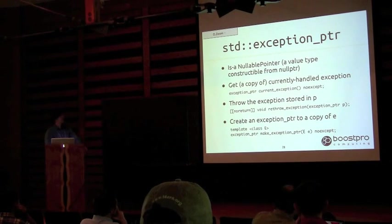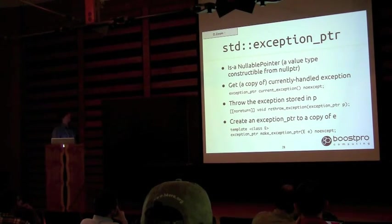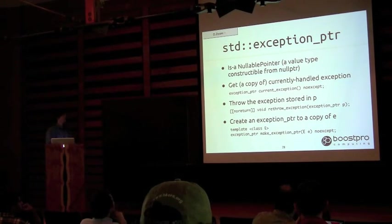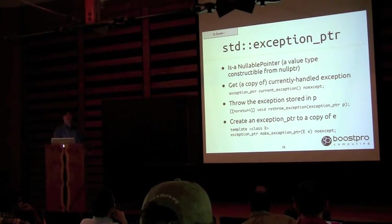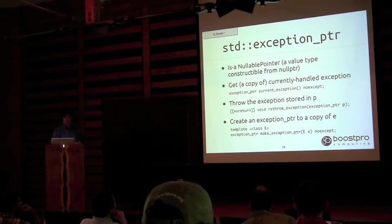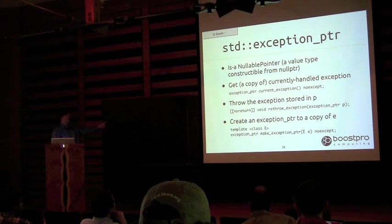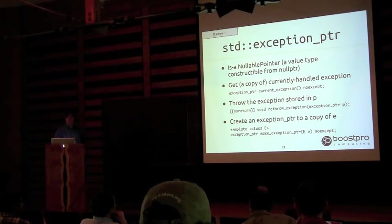exception_ptr is a nullable pointer — value-constructible from a null pointer. You can get a copy of the currently handled exception via current_exception(). You can cause it to be thrown with rethrow_exception(), and you can make an exception_ptr out of any exception type using make_exception_ptr().